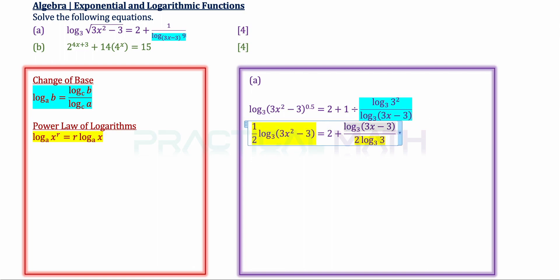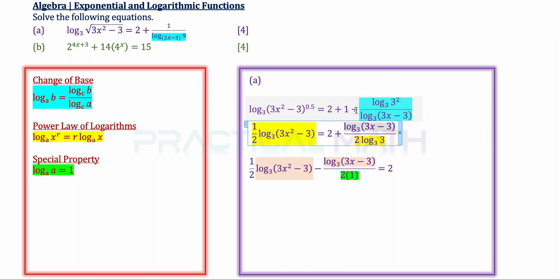Now we use the special property that log A to the base of A equals 1. So log 3 to the base of 3 equals 1. In the denominator on the right-hand side, this becomes 2 times 1, as highlighted in green.